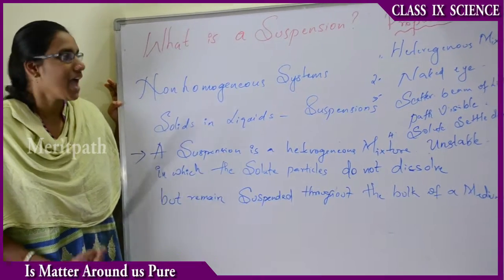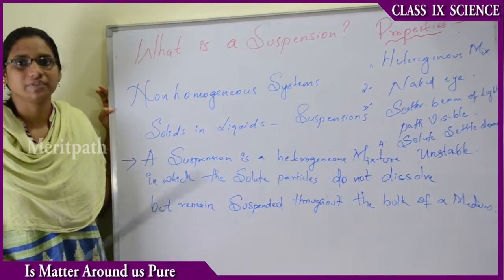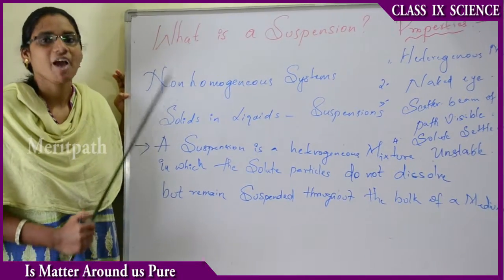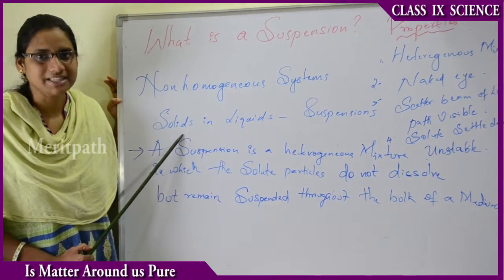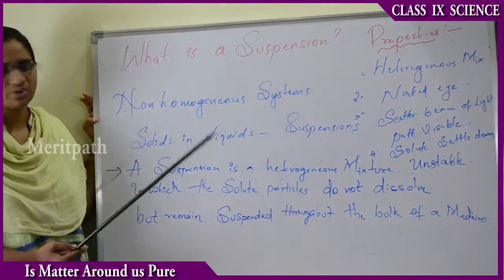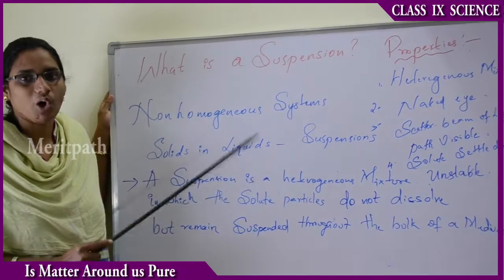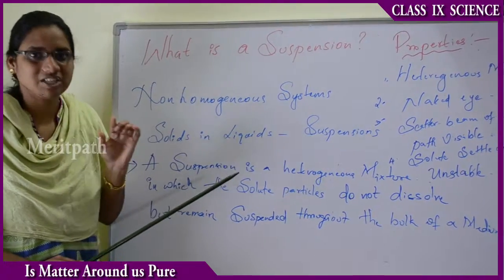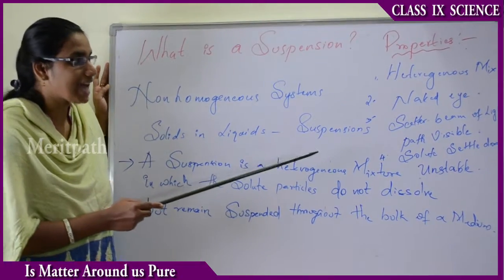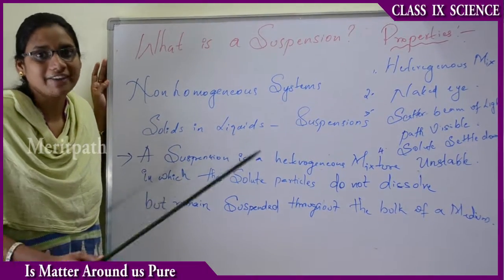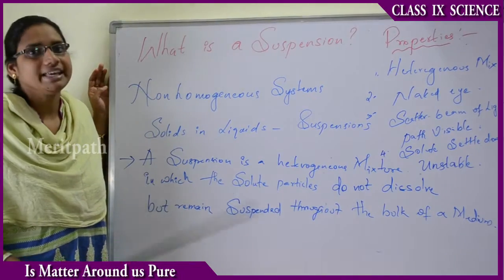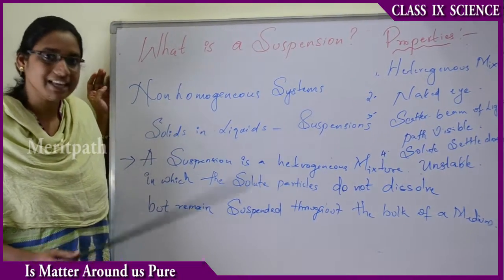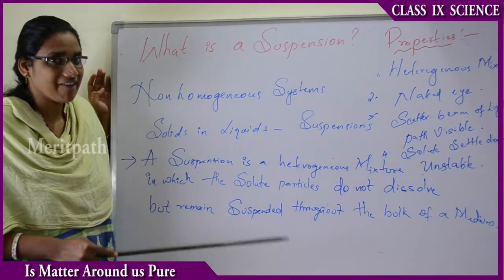Suspension is a non-homogeneous system because the particles are not of the same matter, not the same particles, and do not have the same chemical properties. Hence these are known as non-homogeneous or heterogeneous mixtures. The properties of suspension include: it is a heterogeneous mixture; all the particles can be seen with the naked eye because they are very large in size; and the scattered beam of light — the path of light traveling through the solute — is visible. In homogeneous systems we cannot see the path of light, but in suspensions we can.